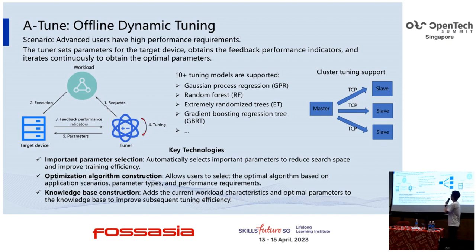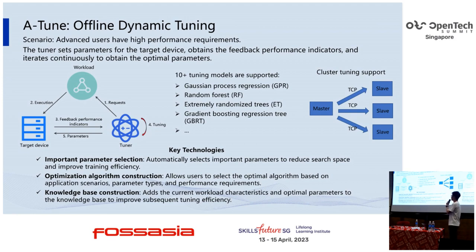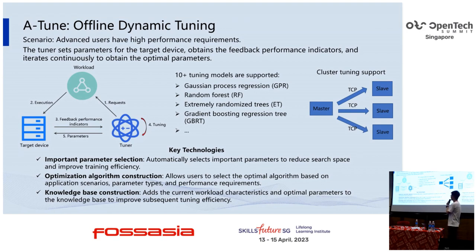The offline dynamic tuning also includes three key technologies. The first is important parameter selection: it automatically selects important parameters to reduce search space and improve training efficiency. The second is optimization algorithm construction: it allows users to select the optimal algorithm based on application scenarios, parameter types, and performance requirements. The third is knowledge-base construction: adding current workload characteristics and optimal parameters to the knowledge base to improve subsequent tuning efficiency.